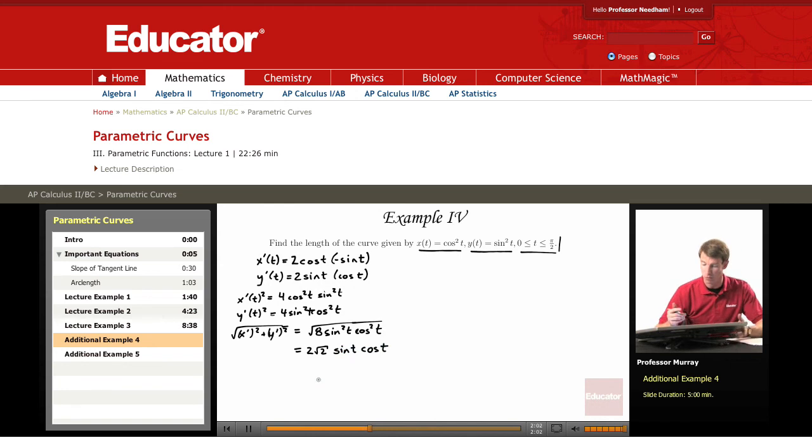And so that's what we want to integrate. The integral from t = 0 to t = π/2 of, I'll write the 2√2 on the outside, sin(t)cos(t) dt.